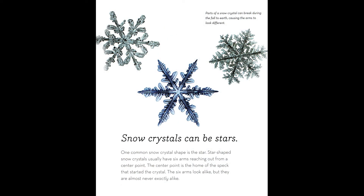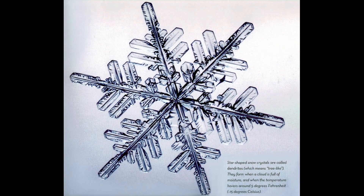Snow crystals can be stars. One common snow crystal shape is the star. Star-shaped snow crystals usually have six arms reaching out from a center point. The center point is the home of the speck that started the crystal. The six arms look alike, but they are almost never exactly alike. Parts of a snow crystal can break during the fall to earth, causing the arms to look different. Star-shaped snow crystals are called dendrites, which means tree-like. They form when a cloud is full of moisture and when the temperature hovers around 5 degrees Fahrenheit, negative 15 degrees Celsius.